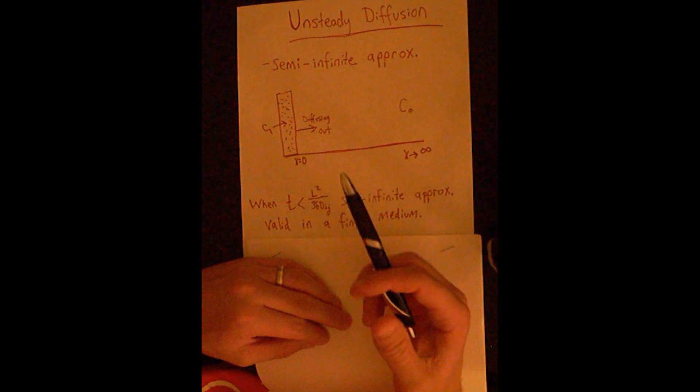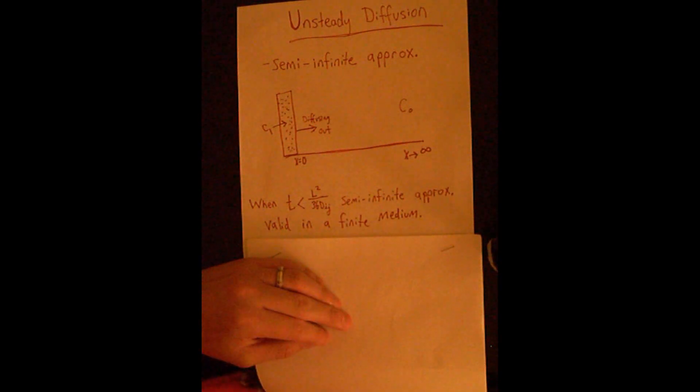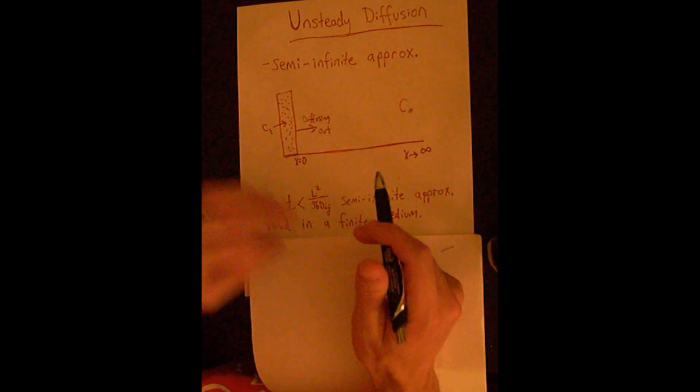So again, this L squared will be the half thickness of tissue or whatever it may be diffusing into. That's one quick and easy test to see if this approximation will work for a finite medium.